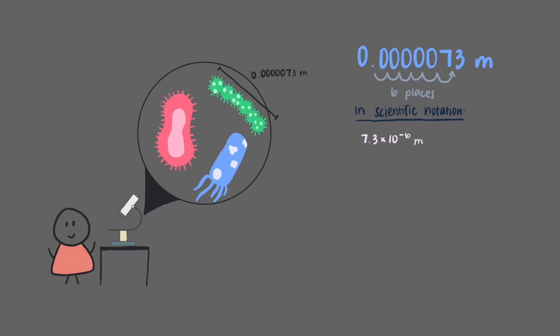Now that we've done a few problems, let's write down the big ideas when it comes to expressing numbers in scientific notation. First, scientific notation is an easier way to write really small or really big numbers. For really big numbers, the exponent on the 10 is positive. For really small numbers, the exponent on the 10 is negative.